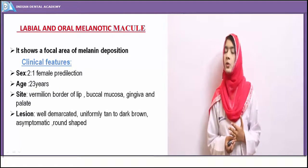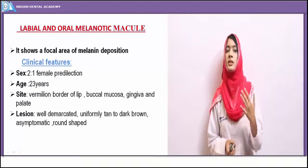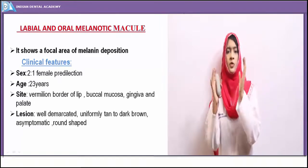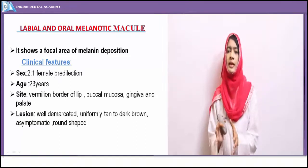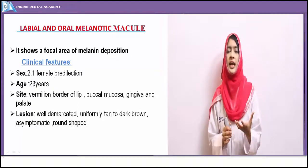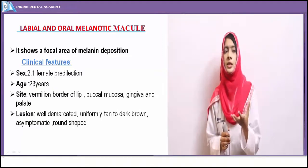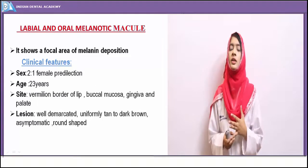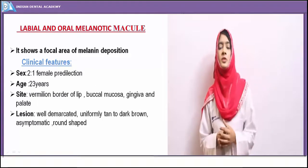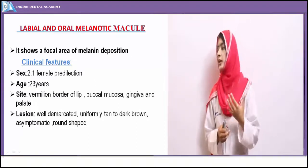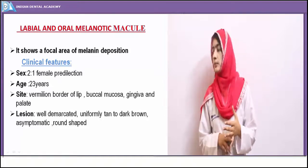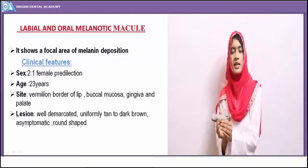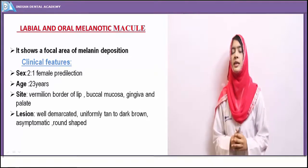The labial and oral melanocytic macule is a form of endogenous pigmentation. It is a focal deposition of melanin in the body occurring anywhere in the oral cavity. Usually the macule is more commonly seen in the lip — lower or upper lip region. Any site in the oral cavity — buccal mucosa, gingiva, or palate — may show some focal collection of epidermal melanocytes leading to deposition of melanin.